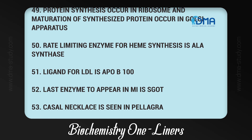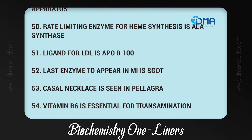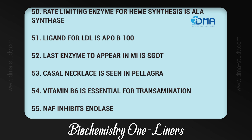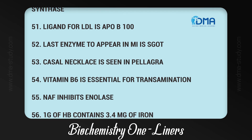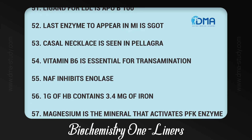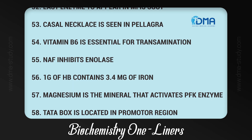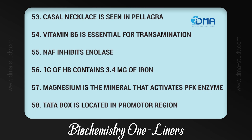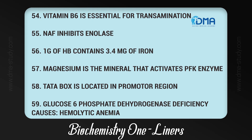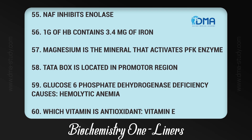53. Last enzyme to appear in starvation is SCOT. 54. Casal's necklace is seen in pellagra. 55. Vitamin B6 is essential for transamination. 56. NaF inhibits enolase. 57. 1g of hemoglobin contains 3.4 mg of iron. 58. Magnesium is the mineral that activates PFK enzyme.